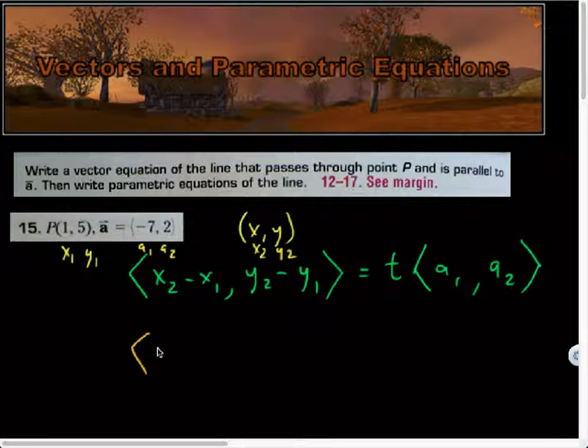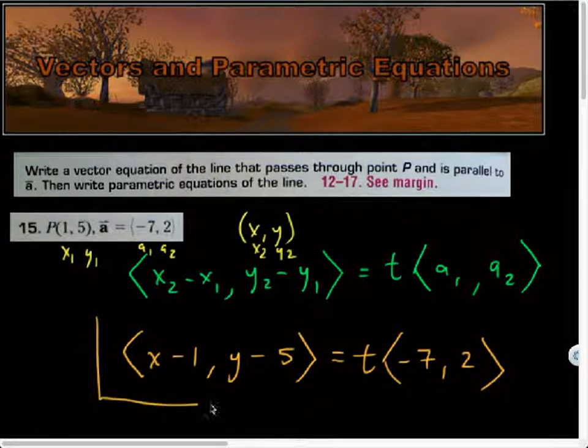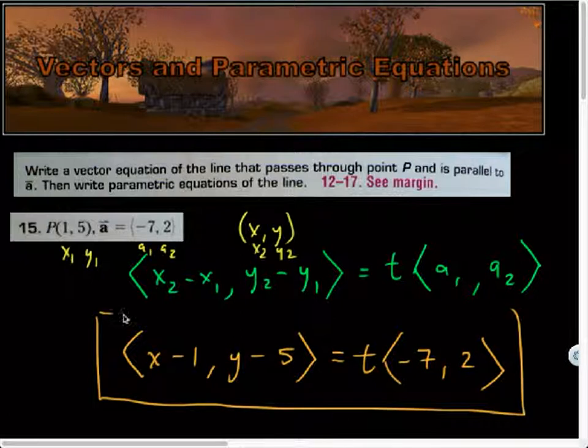So we just have to plug this in, and I'll have the vector equation: X minus 1 comma Y minus 5 is equal to T, it's still T, it's an undefined parameter for us right now where it can represent any time, really, multiplied by vector negative 7 comma 2. So this is the vector equation of the line.